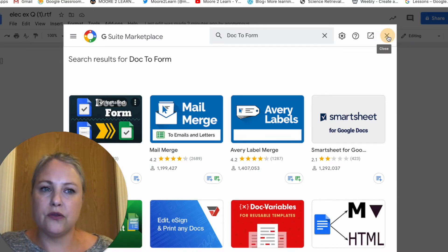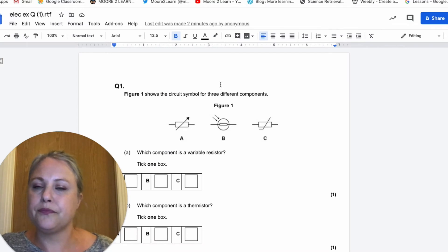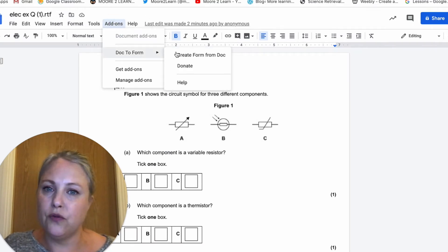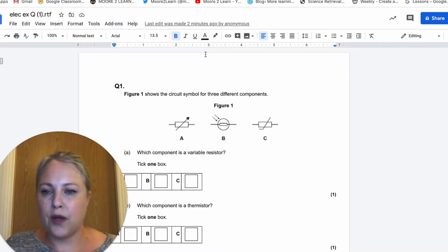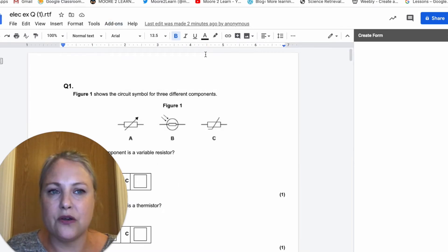So when you install that, it appears in your add-on list. So this one is Doc to Forms. I create a form from the document. Now because it's a free add-on it'll only allow me to have 10 questions. If you paid for it you can get more, it's optional how much you want to pay.